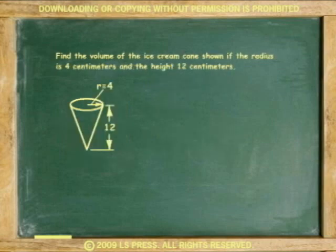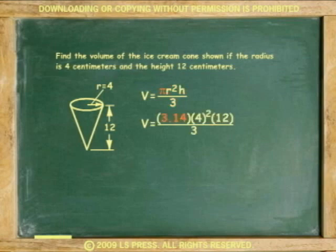Another example, find the volume of this ice cream cone if the radius is 4 centimeters and the height 12 centimeters. The volume of the cone equals the volume of the cylinder divided by 3. The answer is 3.14 times 4 squared times 12 divided by 3 or 200.1 cubic centimeters.